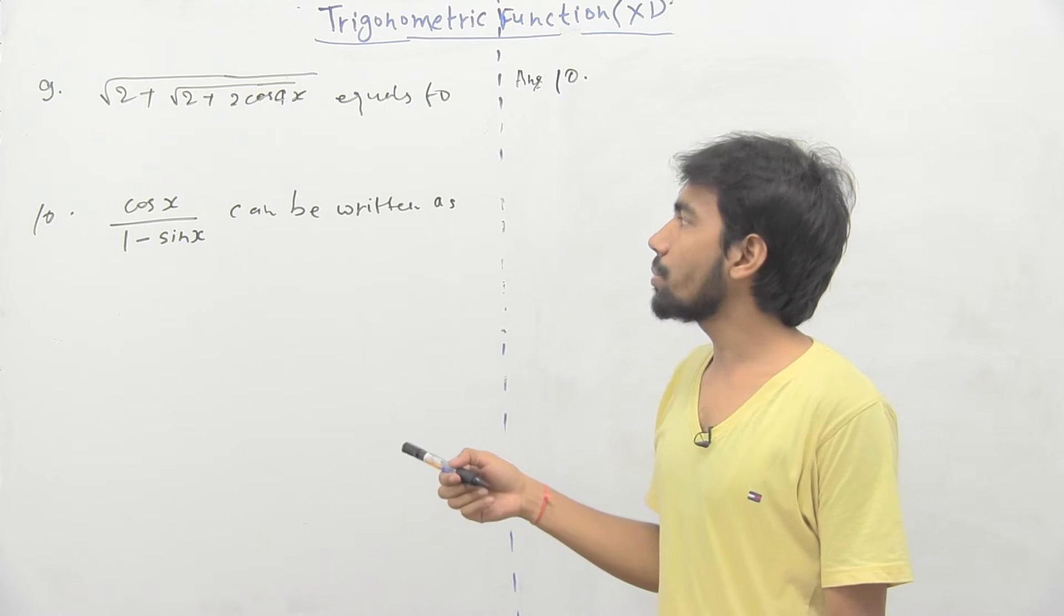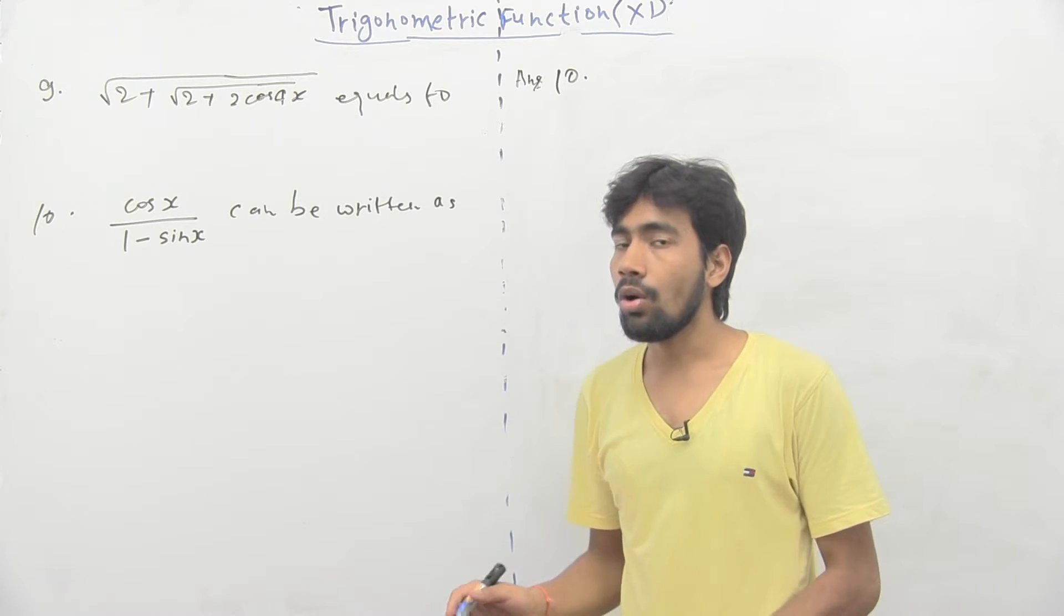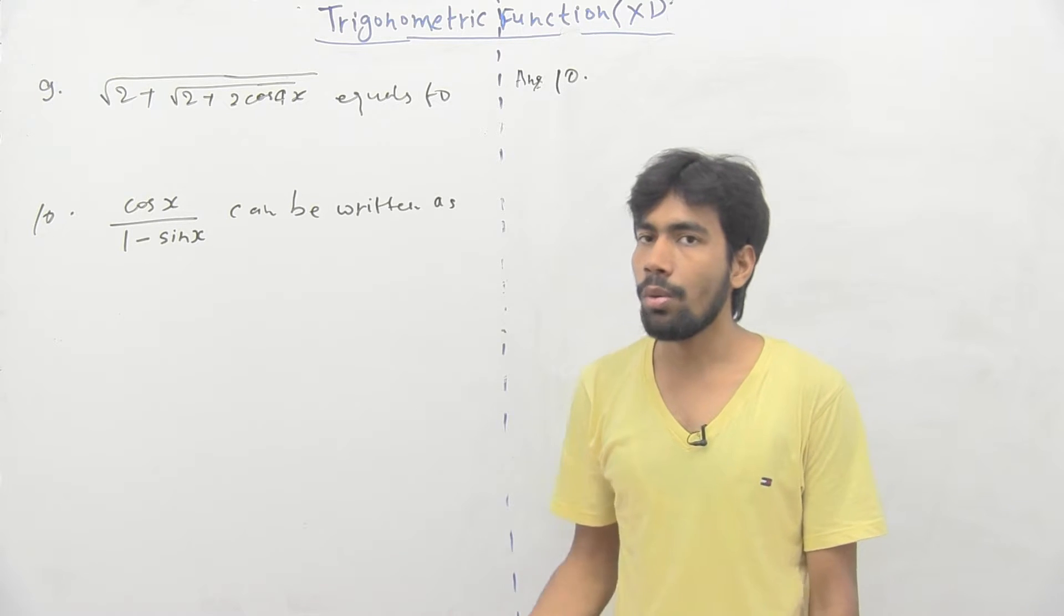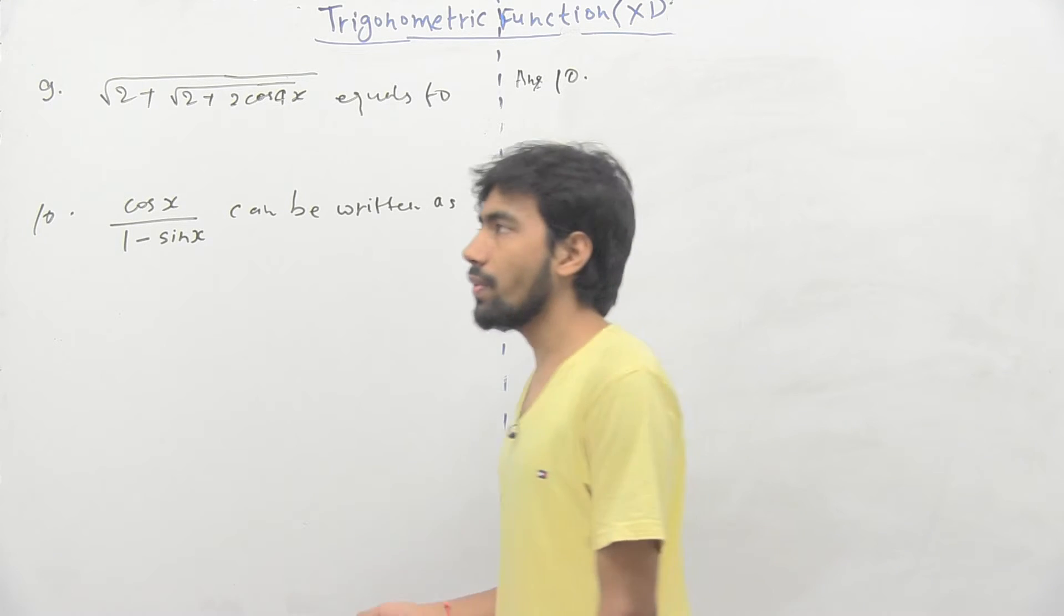Now, see question number 10. We have to simplify cos x minus 1 divided by 1 minus sin x and all the options are given in the form of tan theta, tan x. So, now, simplify it.